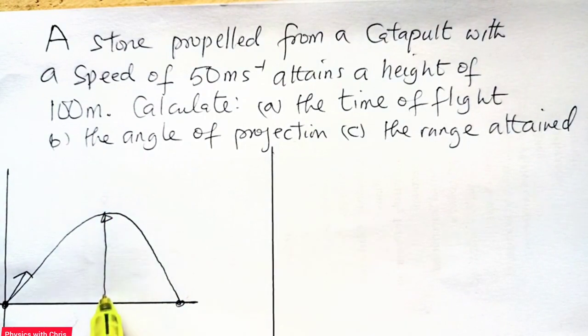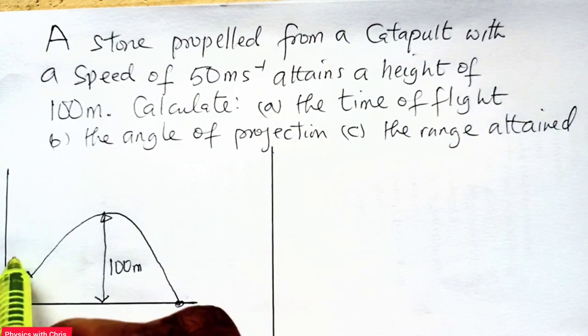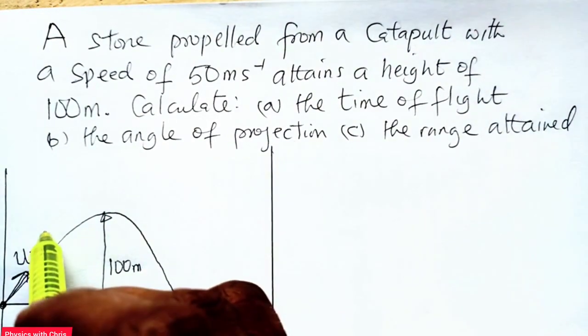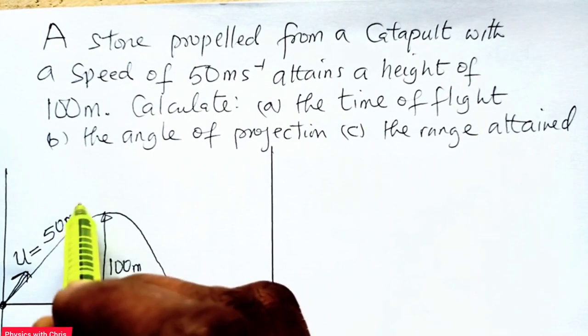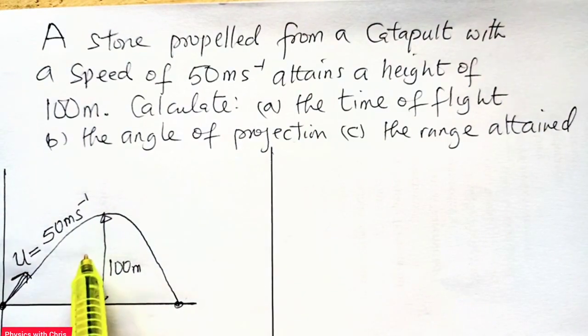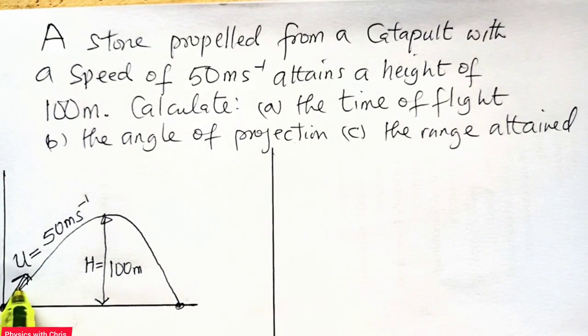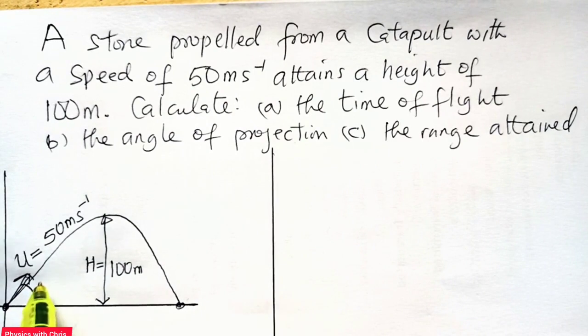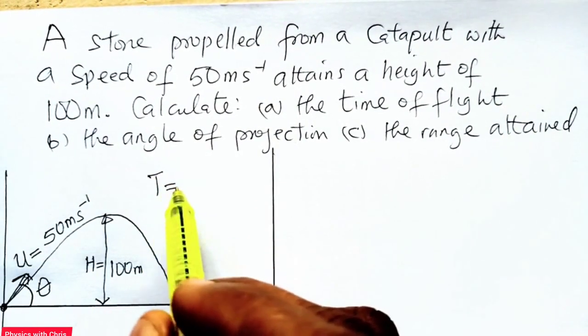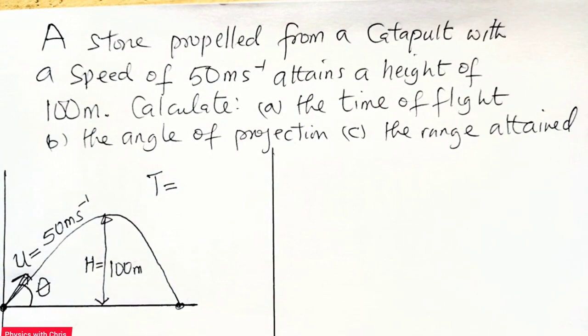Now we have been given the maximum height raised by the stone as 100 meters. Also, we've been given the initial speed of the stone as 50 meters per second. So you are given the initial speed of projection and the maximum height above the ground level attained by this stone. But we are not given the angle of projection, that is the launch angle theta degrees. We are asked to find the time of flight. Recall the time of flight. We did derive the equation for time of flight.